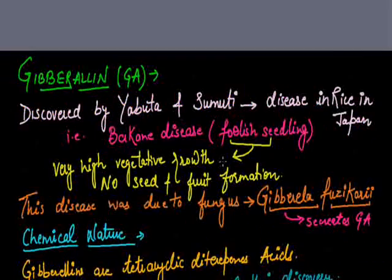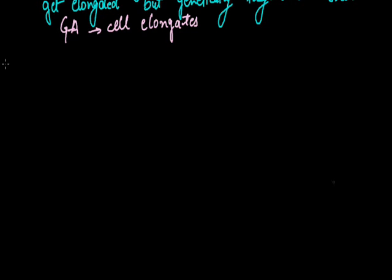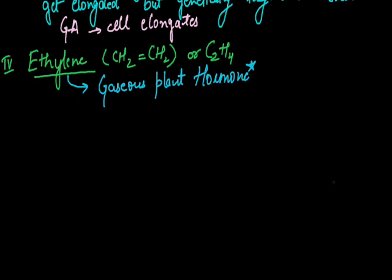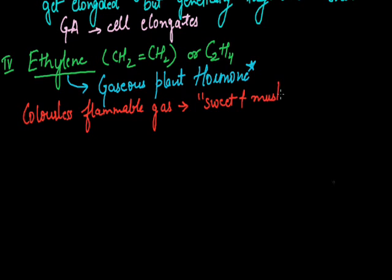Now this is all about gibberellin. Now the next hormone, the fourth one, is ethylene. The common formula for ethylene is CH2 double bond CH2, or we can also say C2H4. This is the only hormone which is present in gaseous form, that is, it is a gaseous plant hormone. Ethylene is a colorless, flammable gas with sweet and musty odor.